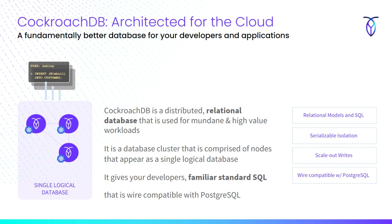CockroachDB is architected for the cloud, but it's just a relational database — familiar SQL. It's wire-compatible with Postgres, so it looks and feels like the same SQL syntax developers have used for years. Can you do online schema changes? Do you have referential integrity? These are things you don't see in document databases like MongoDB. In more complex or mission-critical systems, developers want to use relational models.